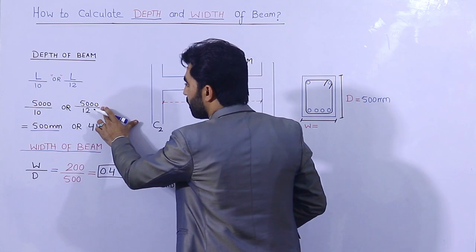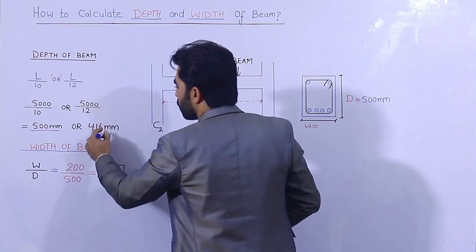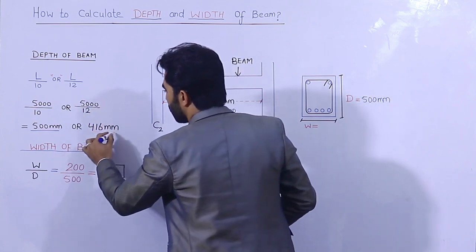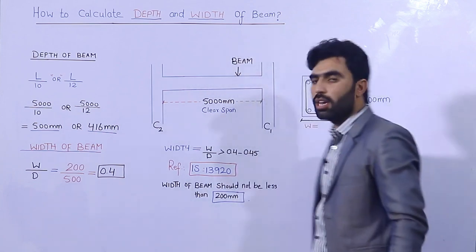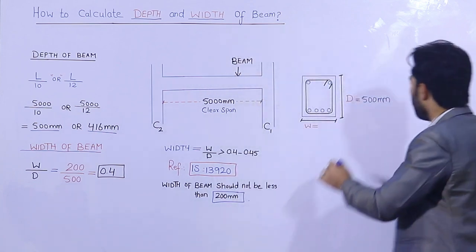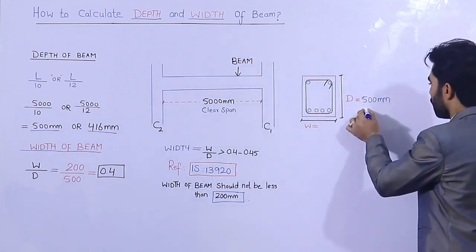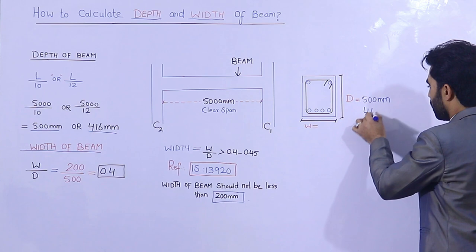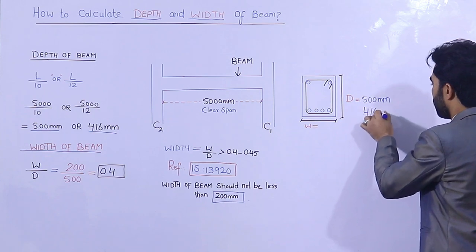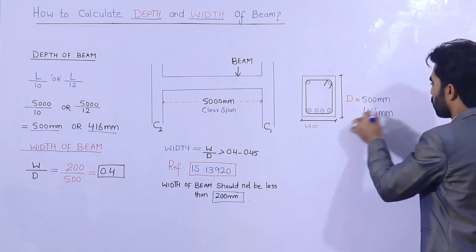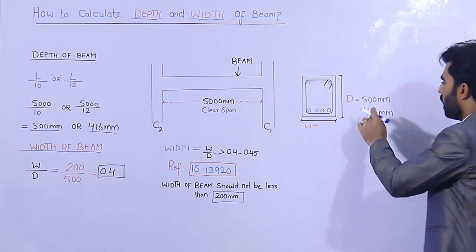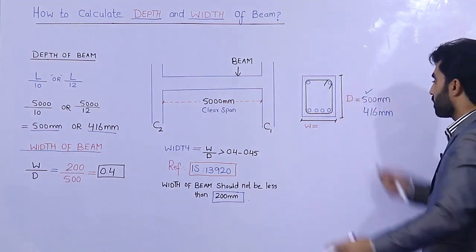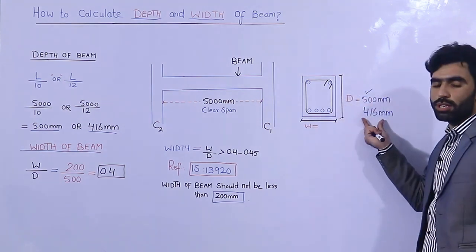Alternatively, using L divided by 12: the clear span is 5000mm, so 5000 divided by 12 gives approximately 416mm. So you can take either value, but 500mm is better than 416mm.